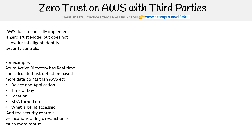Just as one particular example, device and application is not something that AWS factors in with the existing controls, or at least not in a way that is consumer friendly. I can't say on AWS, when you think that this is the type of threat, only allow them access to these things. Or if you think they're in a risky location, only give them access to things where there's not sensitive data — you can't exactly do that in AWS very easily.